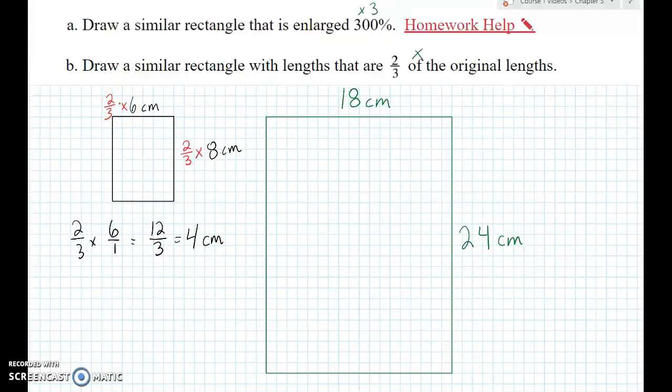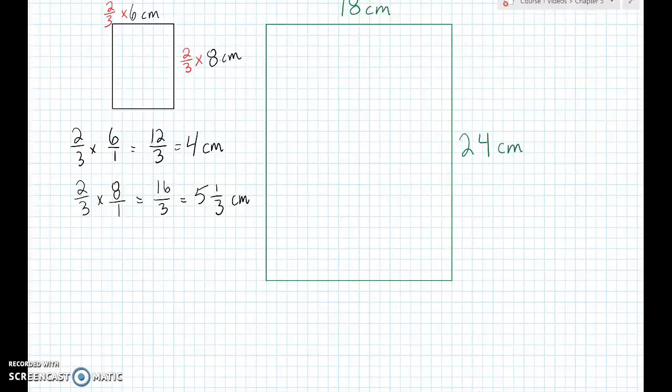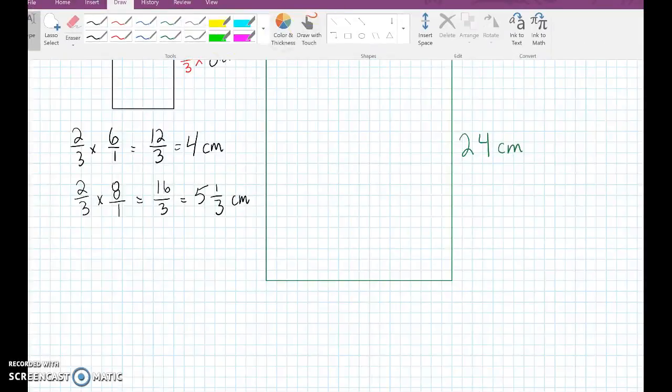8 is a little bit more difficult, taking 2 thirds of 8, because 8 doesn't split into 3 parts with a nice integer number. So, let's see. That's 16 thirds, which is what? So, there are 5 whole 3's. There's 5 and 1 third centimeters. So, let's draw that rectangle - 4 centimeters by 5 and 1 third.